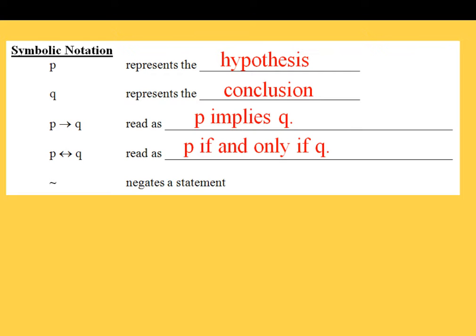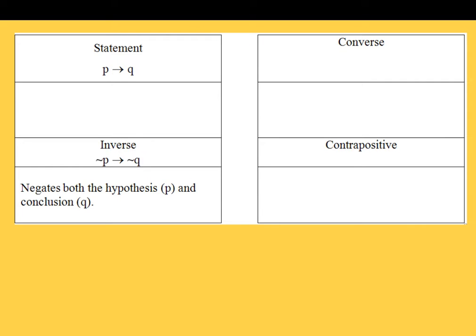Organizationally, I'm going to teach you the box method. This is only one technique — you probably won't see this in a lot of textbooks, but it helps from an organizational perspective. The statement is going to be symbolically p implies q: you're going to take your hypothesis and your conclusion and put those pieces together.